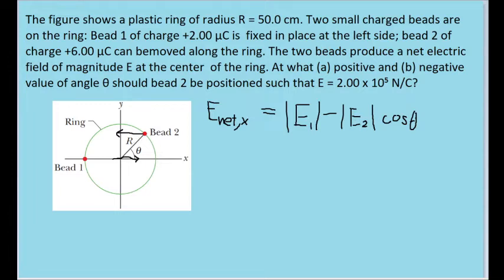I am also multiplying the field from bead 2 by the cosine of the angle, since we're looking for the x-component, and bead 2 is positioned at an angle relative to the center point, rather than being on the same axis as the central point, as is the case with bead 1.